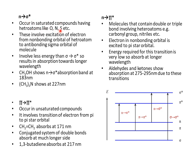The second type of transition is n→σ*. It generally occurs in saturated compounds containing heteroatoms such as oxygen, nitrogen, or sulfur, which have lone pairs of electrons. The energy of this transition is less than that of σ→σ*, so absorption appears at longer wavelengths. For example, methanol shows an n→σ* absorption band at 183 nm, and trimethylamine shows an n→σ* transition at 227 nm.